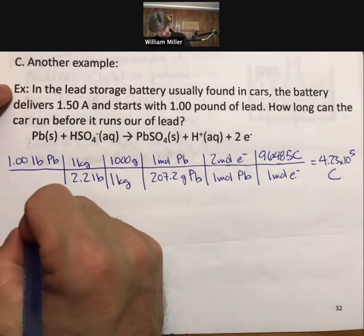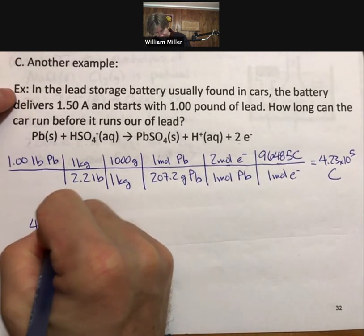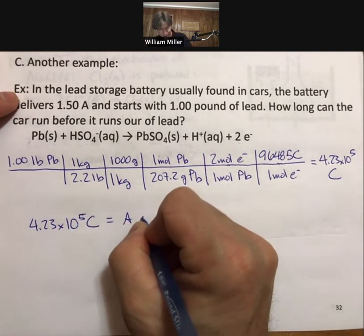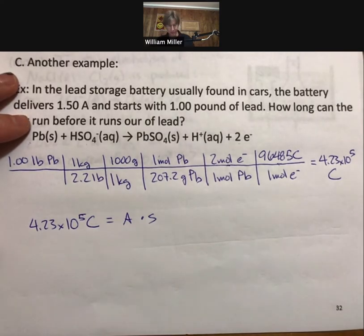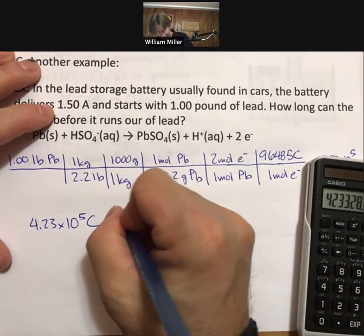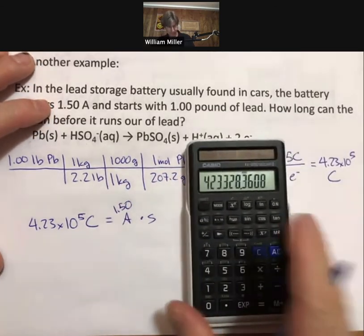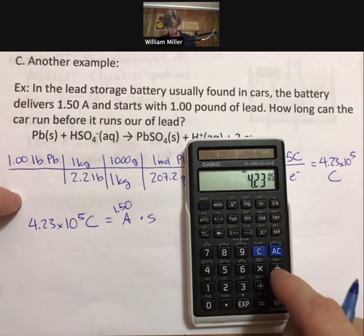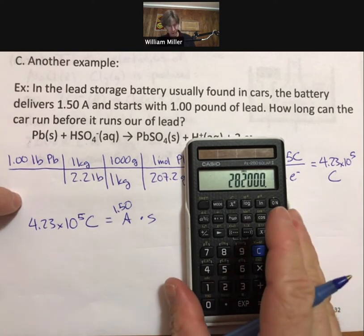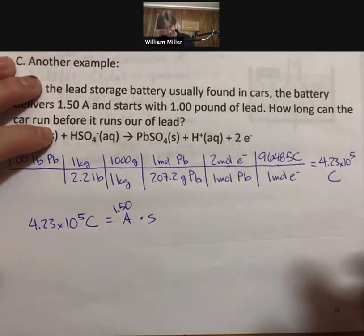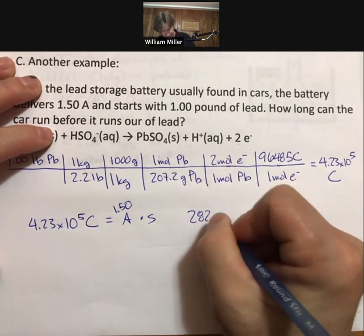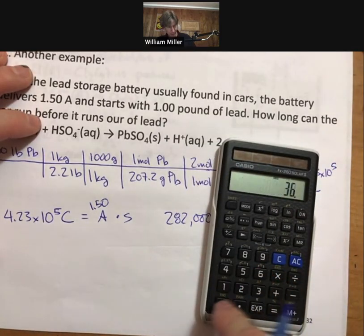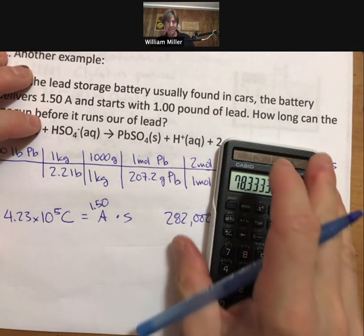4.23 times 10 to the fifth coulombs equals amps times seconds divided by our 1.50 amps. Divided by 1.5, I get 282,000 seconds. Which, again, we'll divide by 3600, 78 hours.